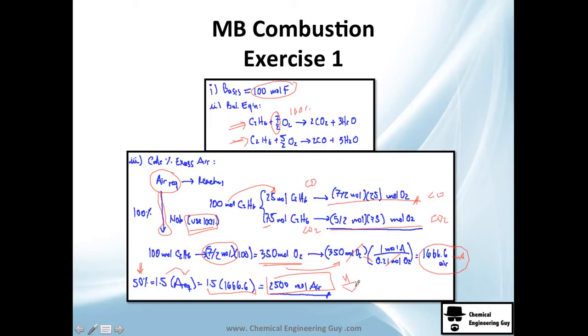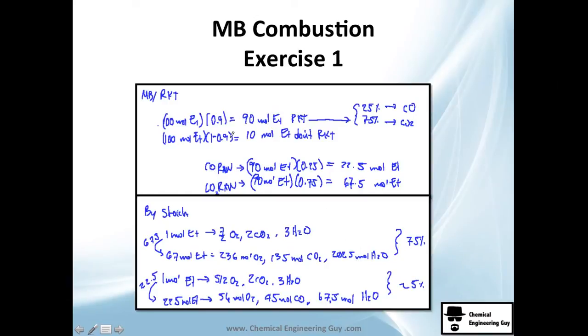Now let's do a mass balance on the reactor to see how much we're producing of each component. 100 moles will react - 90% of it will react, so this 90 goes out, and 1 minus 0.9 equals 10% unreacted ethane in the output. From this 90%, 25% goes as CO, so 90 times 0.25 gives the amount in the CO reaction, and 90 times 0.75 gives the amount of ethane going to the CO2 fraction.